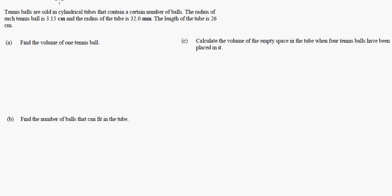Tennis balls are sold in cylindrical tubes that contain a certain number of balls. The radius of each tennis ball is 3.15 centimeters, the radius of the tube is 32 millimeters, the length of the tube is 26 centimeters. Okay, so the first thing that sticks out to me there is that they put this in millimeters. So I'm going to change that to centimeters. Sometimes they do a little trick like that. So if you have 32 millimeters, to go to centimeters you have to move the decimal point over one space. So it's going to be 3.2 centimeters, that way we're working with the same units and you don't mess up your answers.